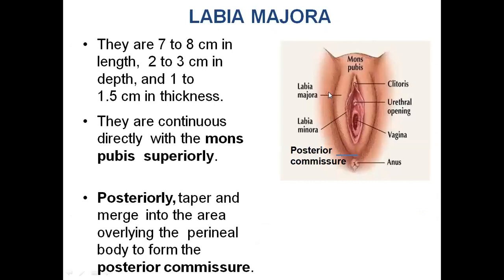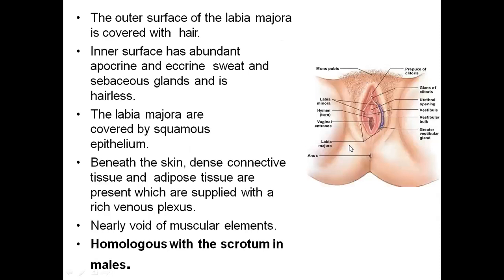The labia majora are the major lip-like folds seen in the vulva. They are 7–8 cm in length, 2–3 cm in depth, and 1–1.5 cm in thickness. They are continuous directly with the mons pubis superiorly. Posteriorly they taper and merge into an area overlying the perineal body to form the posterior commissure. The outer surface of the labia majora is covered with hair.